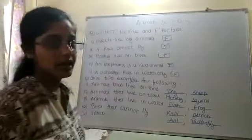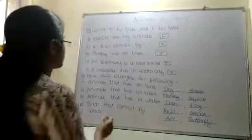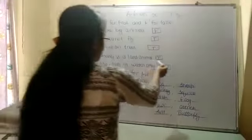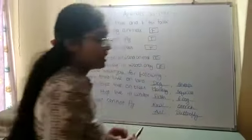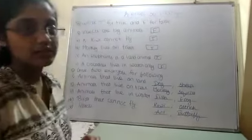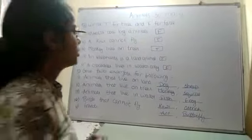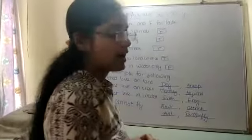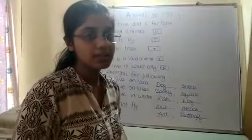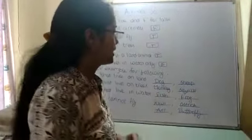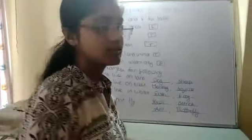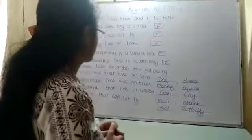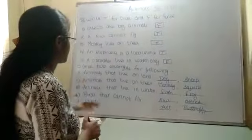A monkey lives on a tree — true. An elephant is a land animal — true. Crocodiles live only in water — false, because crocodiles also live on land.